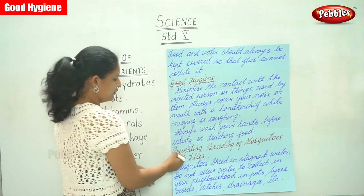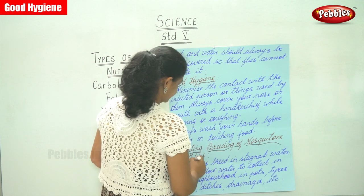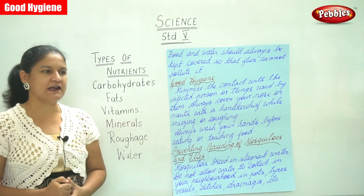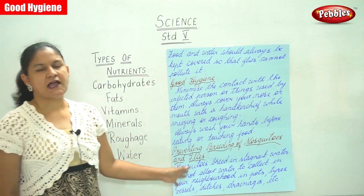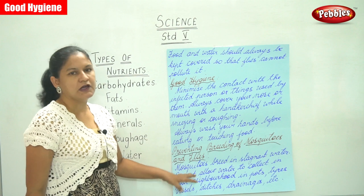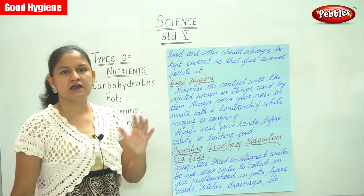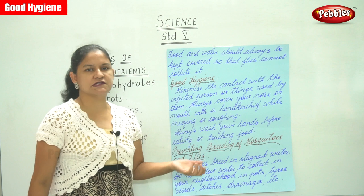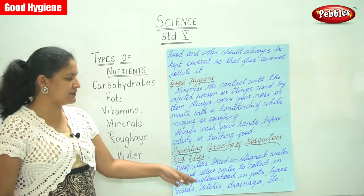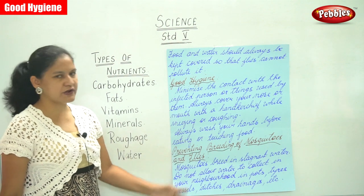The next is we are going to talk about preventing breeding of mosquitoes and flies. Mosquitoes, as we have already seen, breed in stagnant water. So in order to avoid this, we need to see that water does not remain stagnant in our houses or surroundings. Do not allow water to collect in your neighborhood in pots, tires, vessels, ditches, drainages, etc.